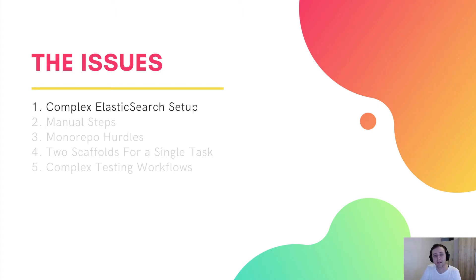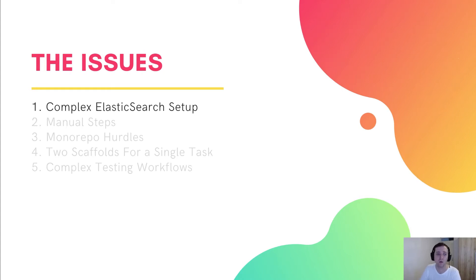The reason we went with Elasticsearch is simply because of its great querying capabilities. However, we noticed that in a lot of cases developers just didn't have a real need for it. Not only that, the code the scaffold generated was definitely complex — it required data to be stored into databases, kept updated accordingly, and so on. This also resulted in a complex testing setup: to run tests you would have to have DynamoDB and Elasticsearch running locally.